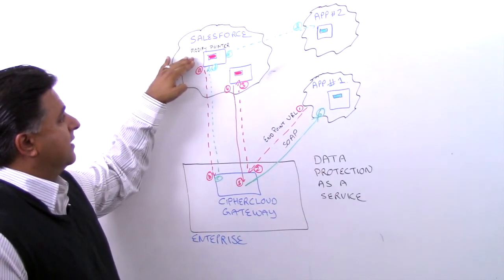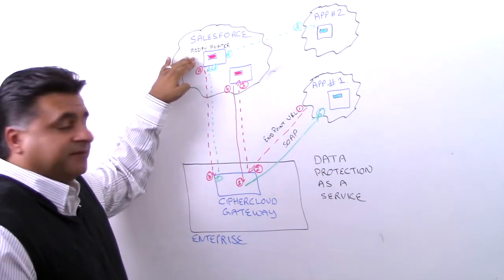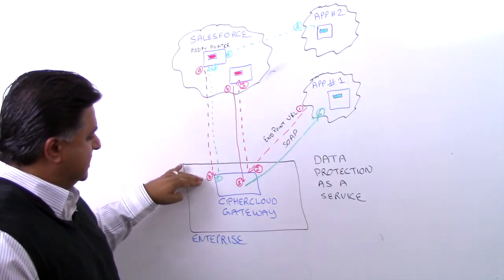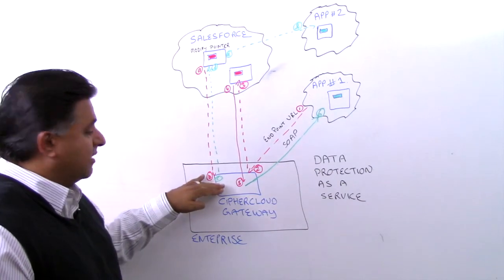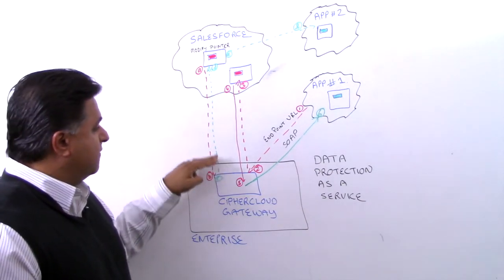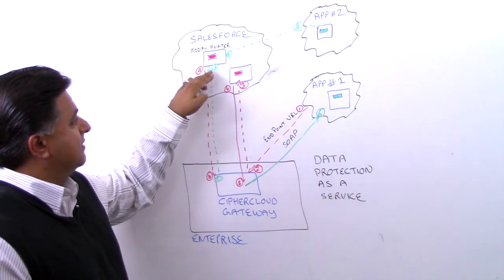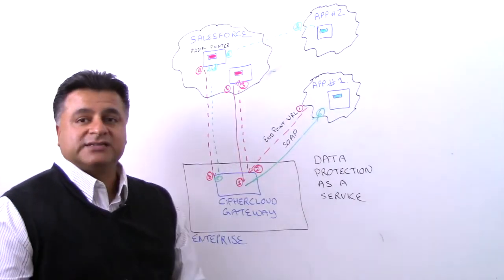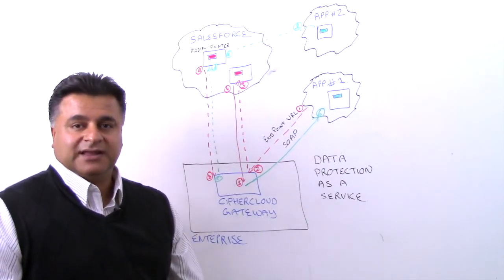So whenever this kind of application requires this information, we actually point to our gateway first, as I've depicted in steps A and B, and then we conduct our decryption or detokenization activity. We then forward that information in clear text in step D, and forward it along to the application so it can do its processing or further activity based upon that clear text information.